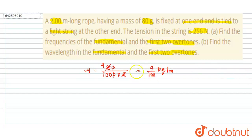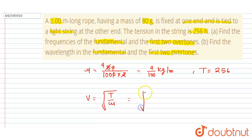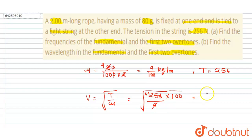The tension here is 256 N. The transverse wave velocity in the string is v = √(T/μ). Putting in the values: √(256 / (4/100)) = √(256 × 100/4) = √(6400). If you solve this, 256 by 4 gives 64, and you get 80 meters per second as the transverse wave velocity.